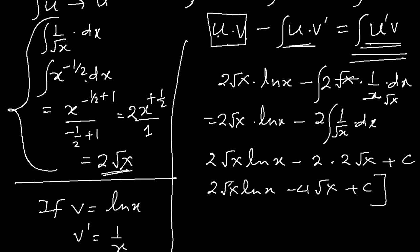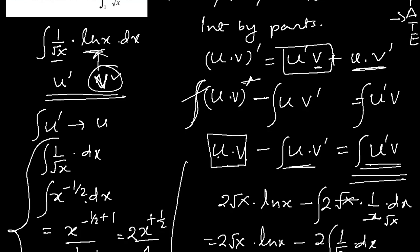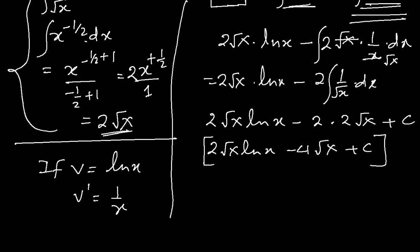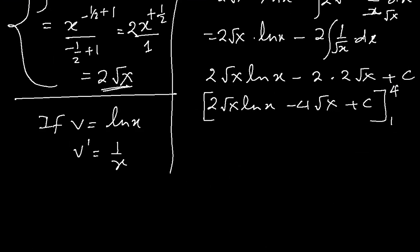And if you remember, we ignored the numbers, which were the limits for the integration, were 1 and 4. So let's write 1 and 4, and finally write our answer. So we'll substitute 1 and 4 by 1 by 1. 2 square root 4, ln 4 minus 4 square root 4 plus c. This is after substituting 4 minus, let me write minus here. Let's substitute 1. 2 square root 1, ln 1 minus 4 square root 1 plus c.